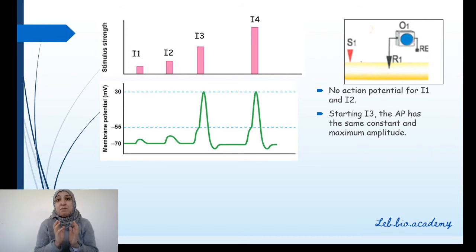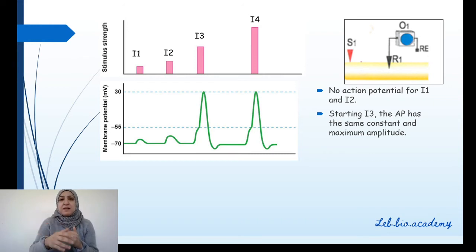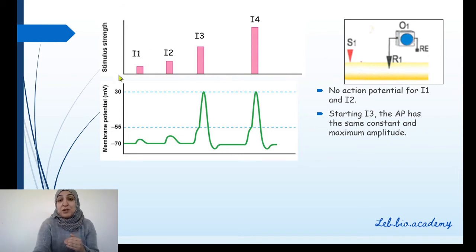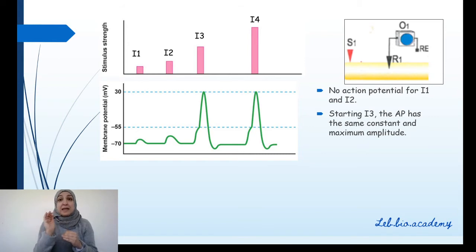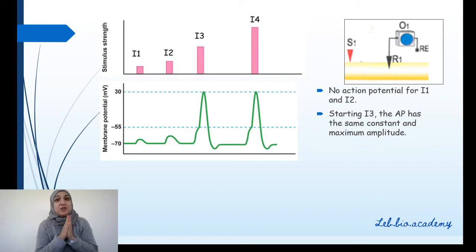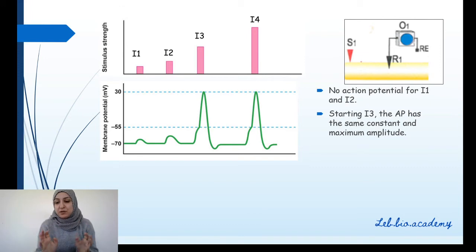There was no action potential for I1 and I2, and starting at I3 the action potential will have the same maximum amplitude — even if you apply greater intensities like I5, I6, or I10. You will obtain the same action potential with the same maximum and constant amplitude. Remember, we are talking about a nerve fiber.